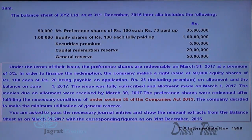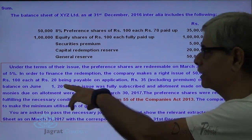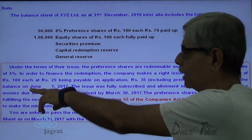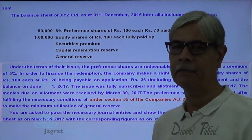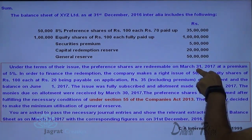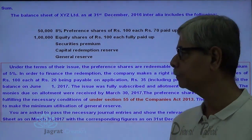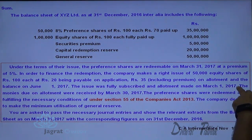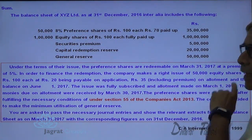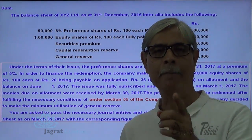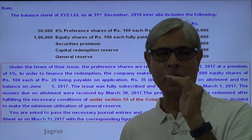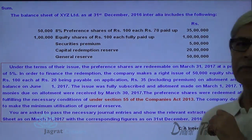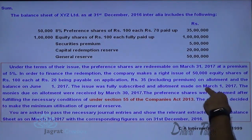In order to finance the redemption, the company makes a rights issue of 50,000 equity shares of Rs. 100 — Rs. 20 being payable on application, Rs. 35 on allotment, and the balance on 1st June 2017. Preference share redemption is to be made on 31st March. The amount on issue of equity shares up to allotment is received before 31st March, because the allotment was made on 31st March.